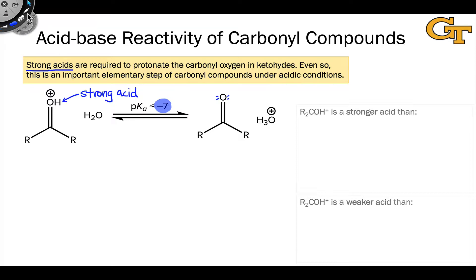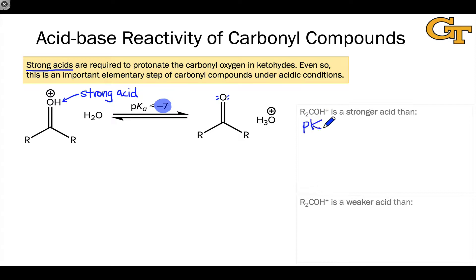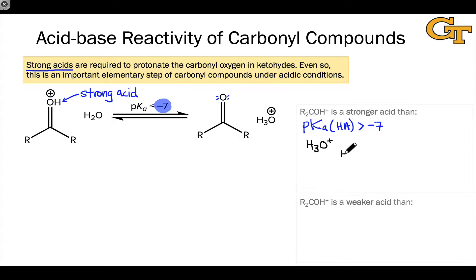To make this more concrete, the pKa of negative 7 is really a benchmark for the strength of the protonated carbonyl group as an acid. So R₂COH⁺, the protonated carbonyl group, is a stronger acid than pretty much anything — anything with a pKa greater than negative 7. This includes even a number of strong acids. For example, R₂COH⁺ is a much stronger acid than hydronium ion, which has a pKa of 0, and by extension stronger than pretty much any neutral acid.